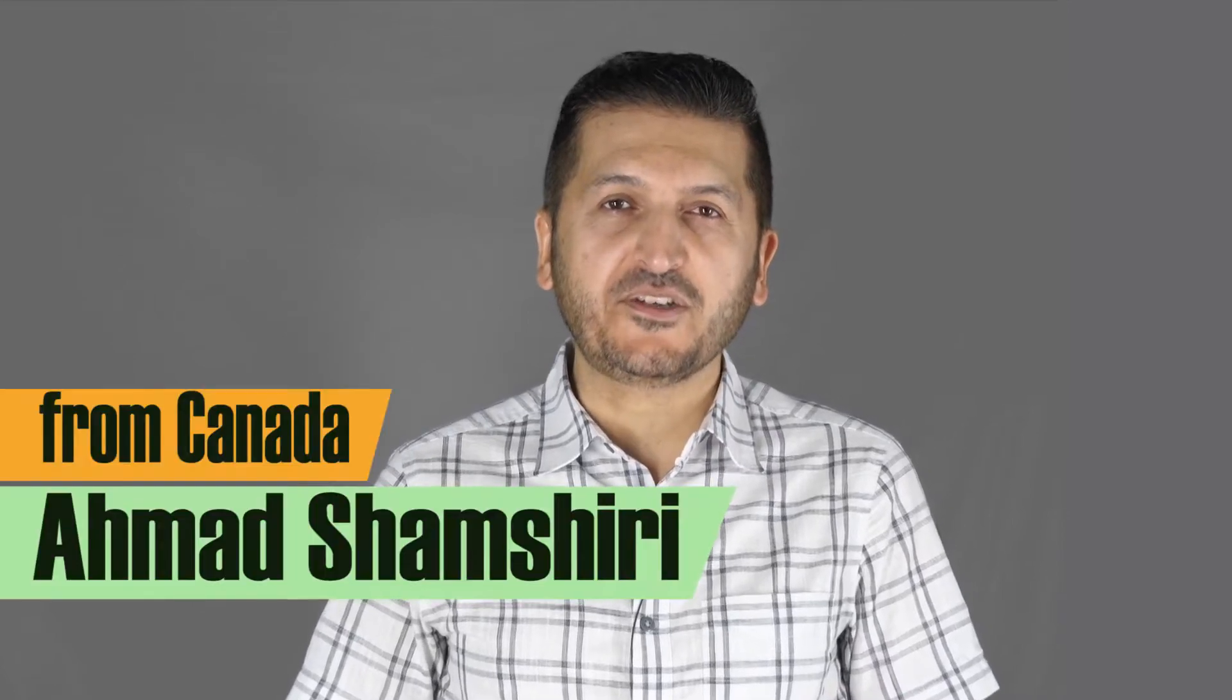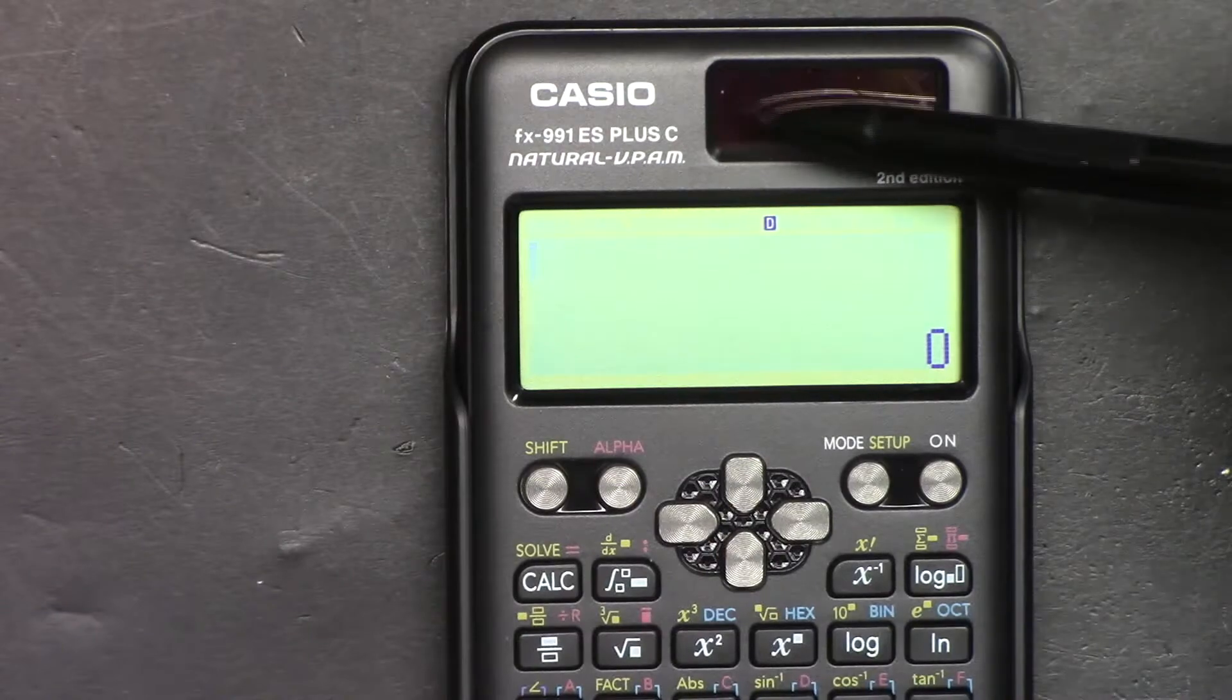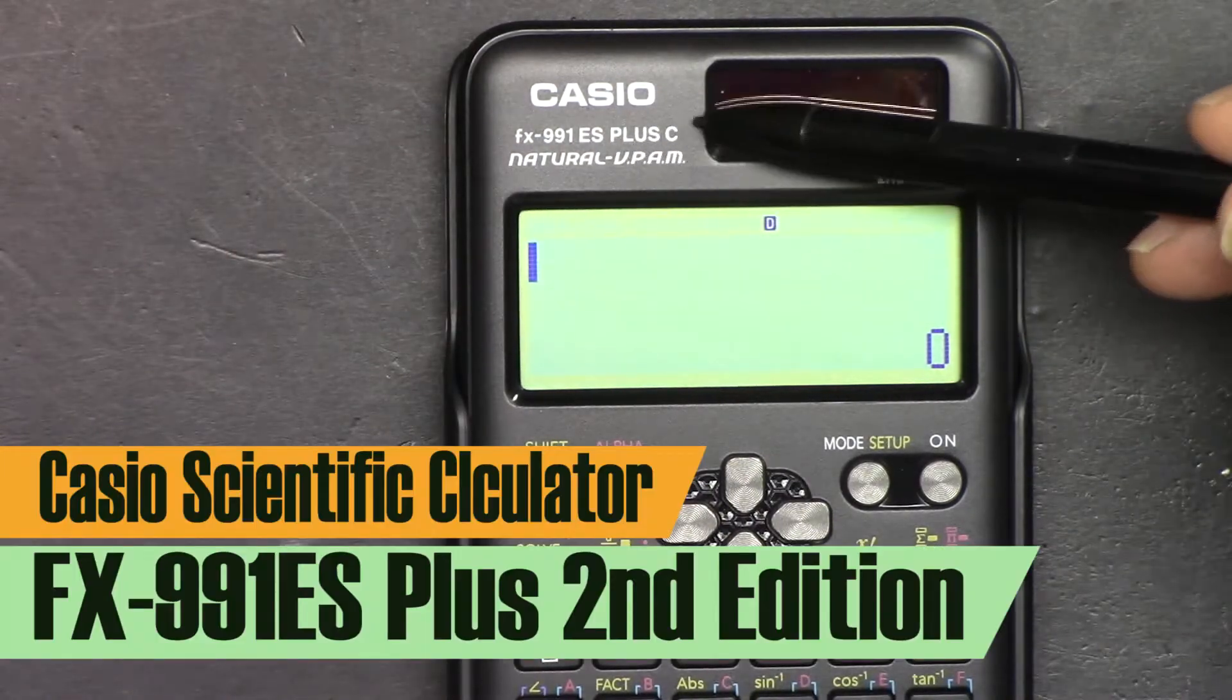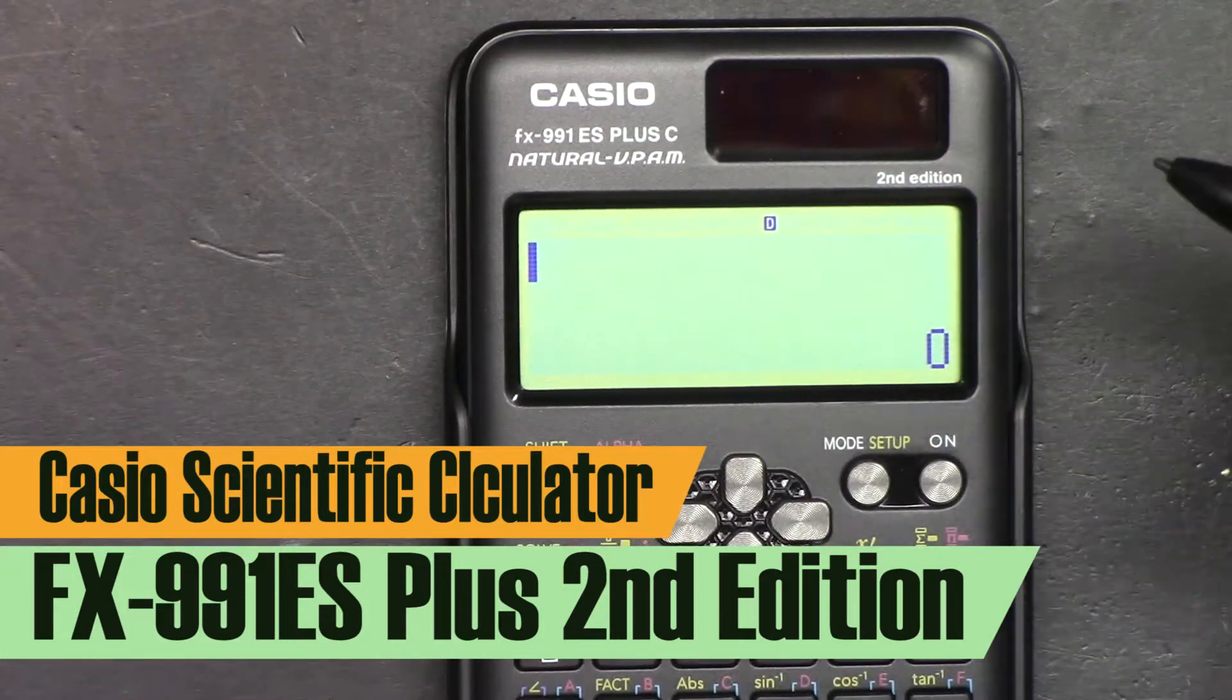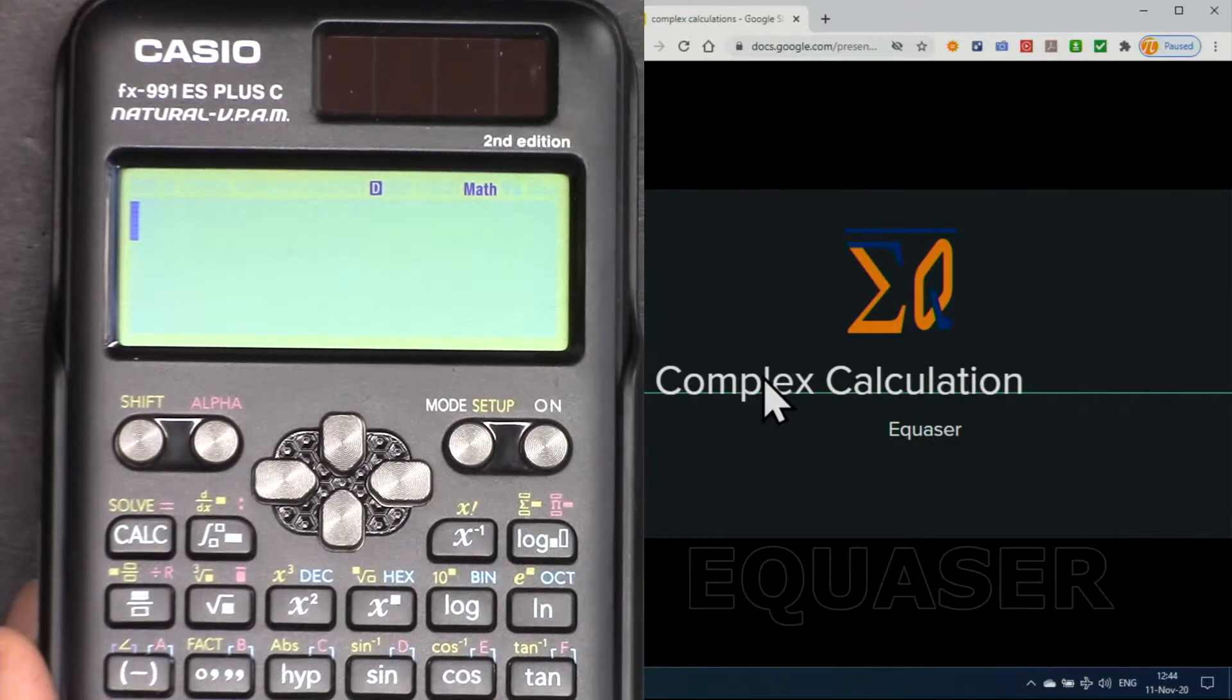Hi, welcome to a video tutorial from Equasor. My name is Ahmad Shamshiri. In this video we are going to use this Casio FX-991EF Plus second edition scientific calculator to do complex calculations. Let's get started with this.